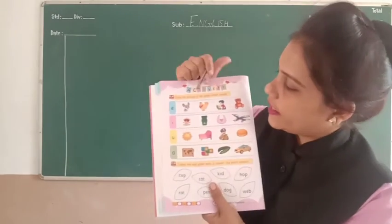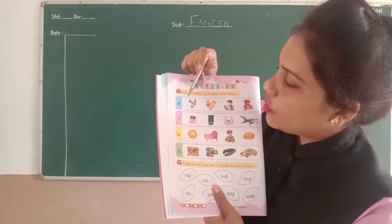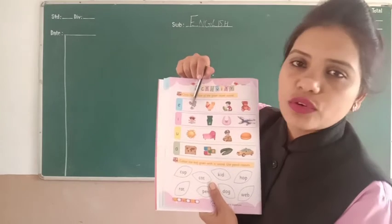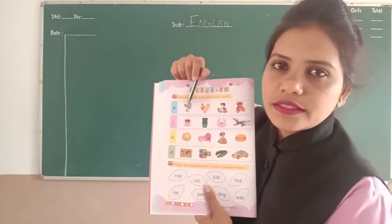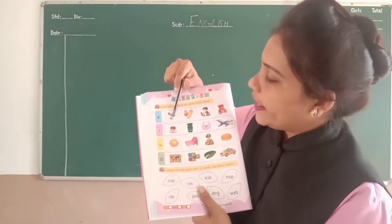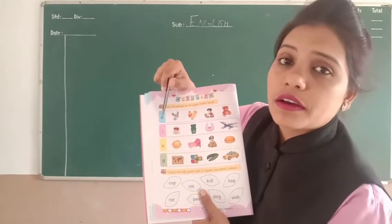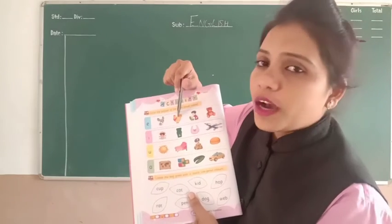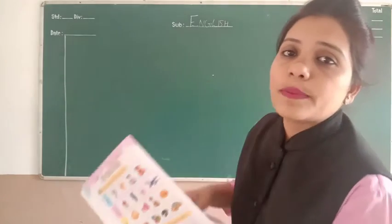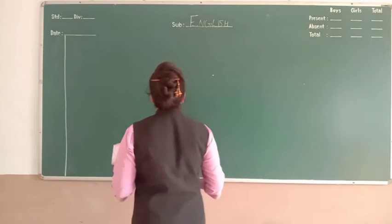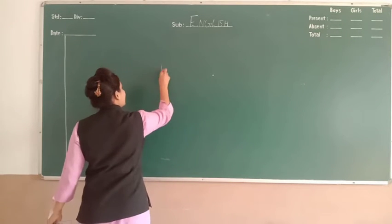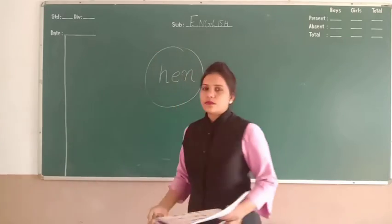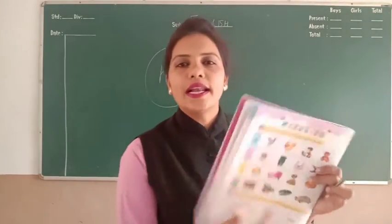तो आपको क्या करना हैं यहाँ देखना है। इसको हम बोलते हैं 'rat' - तो R-A-T है, तो वो तो E नहीं आएगा। तो हमको देखना है E वाला कौन सा है। जब हम 'hand' बोलते हैं तो hand का spelling क्या है? H-E-N-D। तो hand का जो picture है उस पे आपको circle करना है।